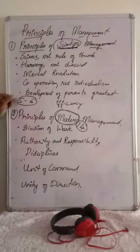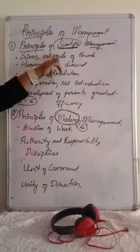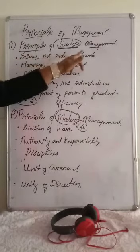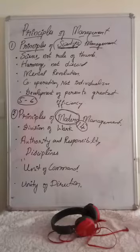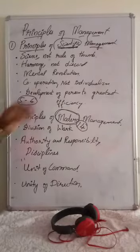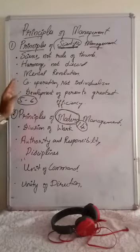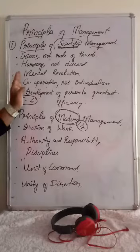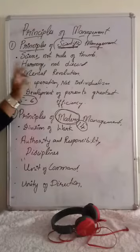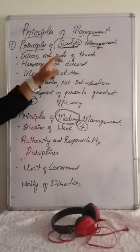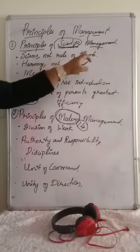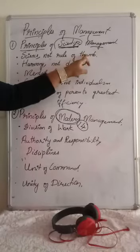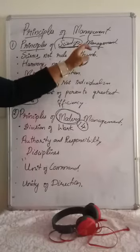The first scientific principle is science, not the rule of thumb. The meaning of the word 'rule of thumb' is the decision taken by the manager as per their personal judgment. The decision should be based upon scientific inquiry, which causes an effective relationship.